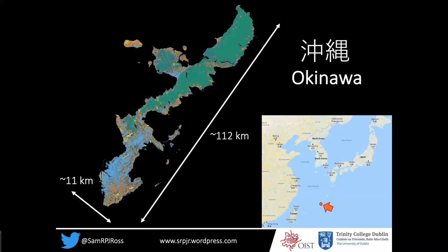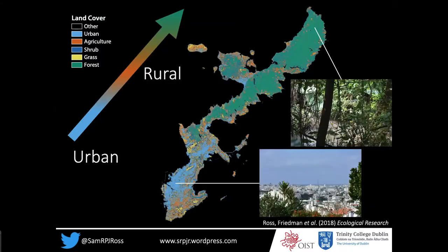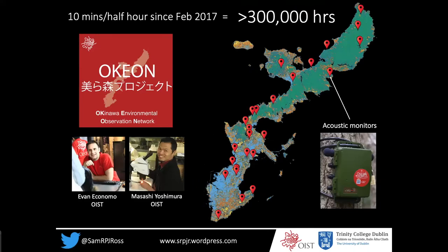I'm going to transport you to the subtropical island of Okinawa, which is to the south of mainland Japan in the Ryukyu Archipelago. When you live in Ireland, Okinawa is a pretty nice place to be. But more importantly, there's a really strong rural to urban gradient with more than a million people living in Okinawa, mainly in the south, in these blue urbanized areas. We record for 10 minutes out of every 30 minutes across 24 field sites that are representative of Okinawa's full range of different land cover types.